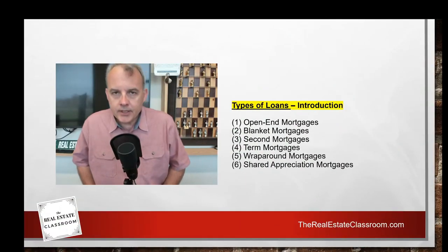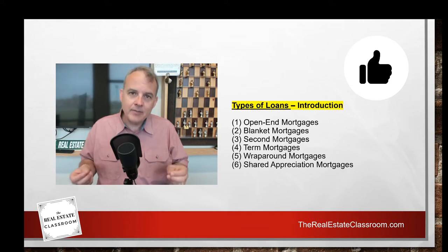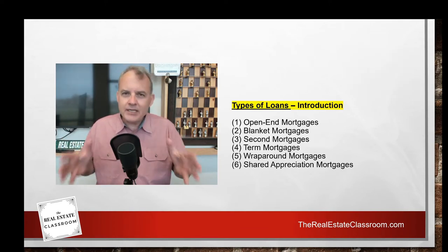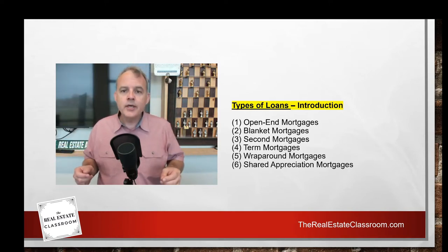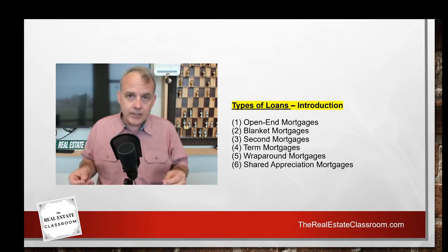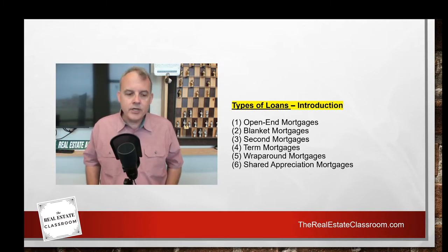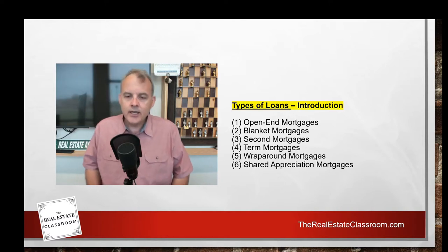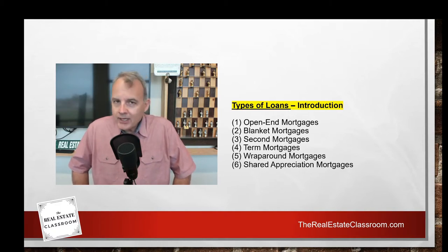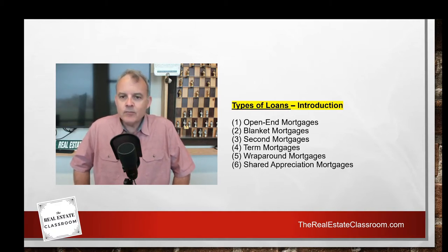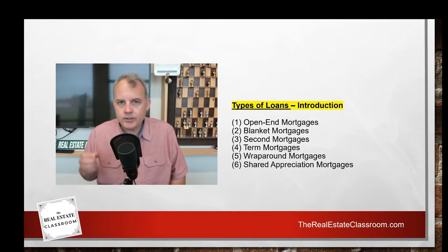In today's video, we're going to discuss types of mortgages that you have to know for your real estate exam. They're not backed by the federal government and they don't fit into the criteria of typical residential conventional type loans, but they are loans that are valid and real in the real estate industry, particularly in commercial and industrial arenas. There are six of them: open-end mortgages, blanket mortgages, second mortgages, term mortgages, wraparound mortgages, and shared appreciation mortgages.